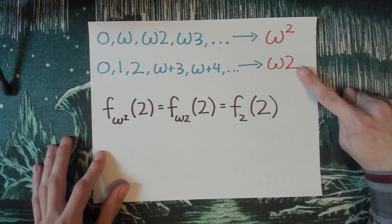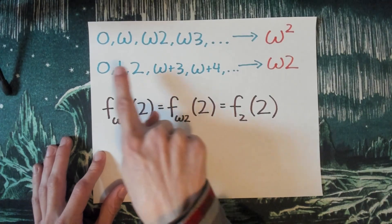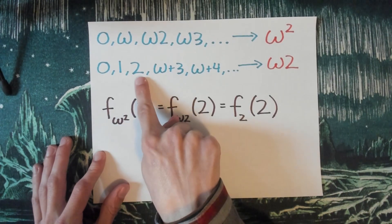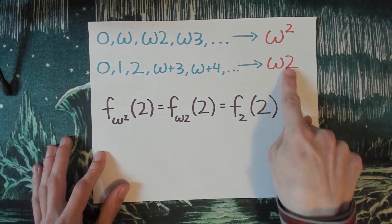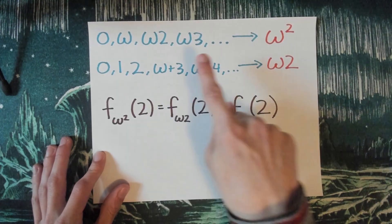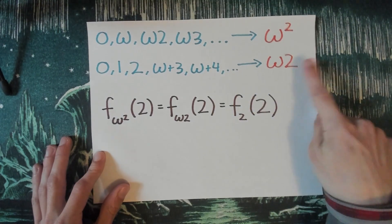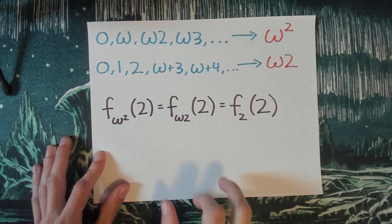And then for omega times 2, 2 here is our positive integer n. So we said the way it's going to work is we just count up to that positive integer, so 0, 1, 2. And then we just have to hurry up and converge to omega times 2. So one way to do that would be omega plus 3, omega plus 4, omega plus 5, dot dot dot. So this will be the fundamental sequence that we go with.